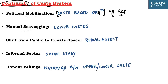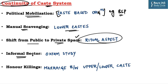The next reason for continuity is manual scavenging — cleaning and carrying human excreta by individuals, mostly restricted to lower caste groups. The next is shift from public to private space: people generally avoid following caste rituals in public spaces but practice them in their personal spaces. The ritual aspect of caste system continues but is confined to the personal sphere. According to a study by Oxfam, Dalits and tribal groups are highly underrepresented in better-paid and higher-status jobs and are disproportionately concentrated in the informal sector.